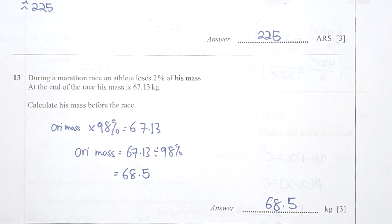Question 13: the original times 98 percent gives you 67.13. After rearrangement, you should get your answer as 68.5.